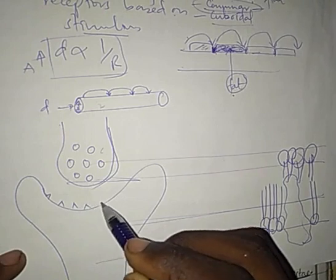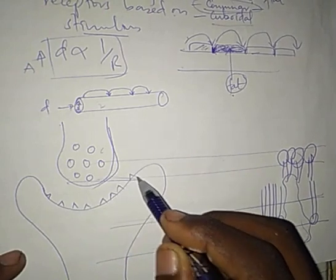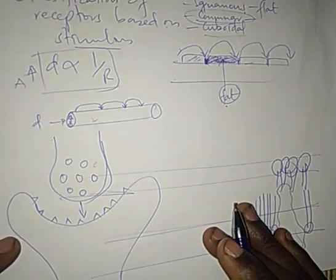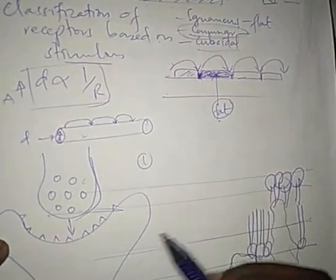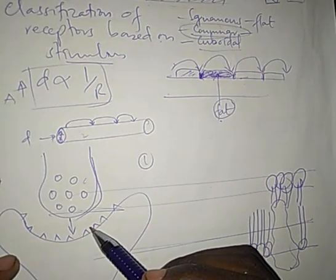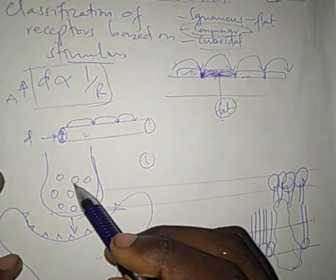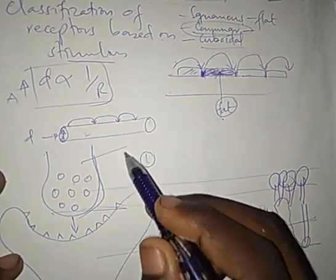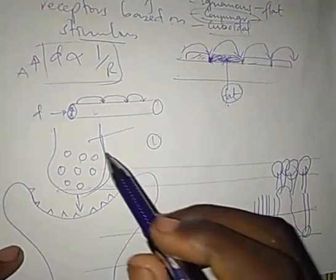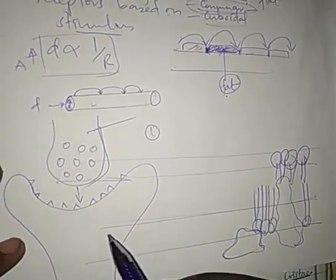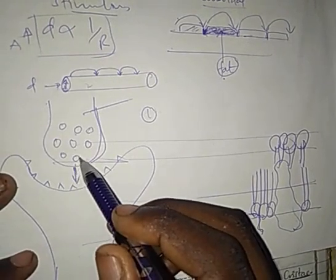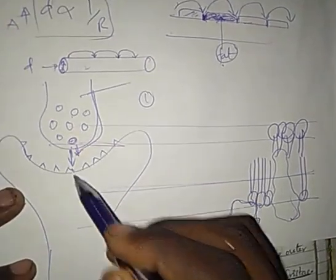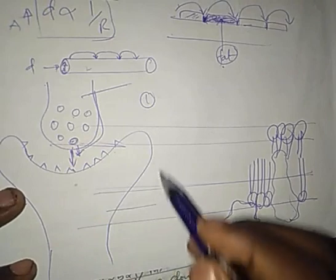How does the synapse ensure impulses travel in one direction? The first reason is the presence of vesicles containing neurotransmitters only in the presynaptic membrane or presynaptic knob. When these vesicles fuse with the membrane, they release neurotransmitter. The second reason is the presence of receptors only in the postsynaptic knob or postsynaptic membrane.